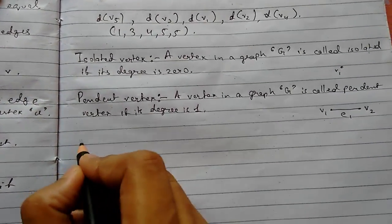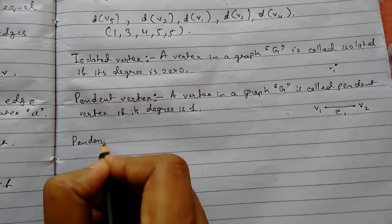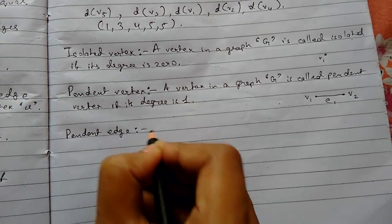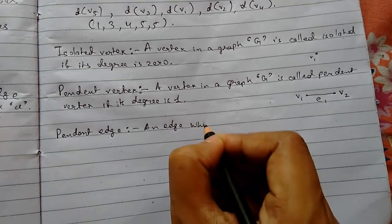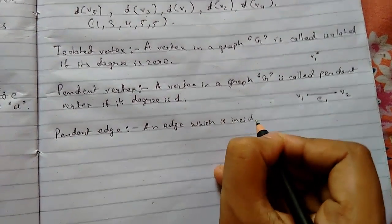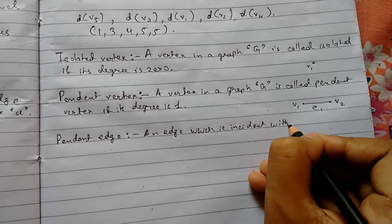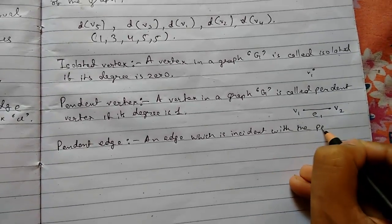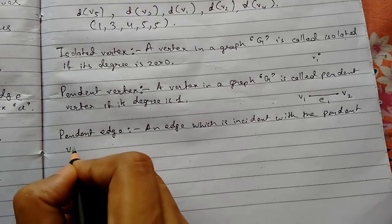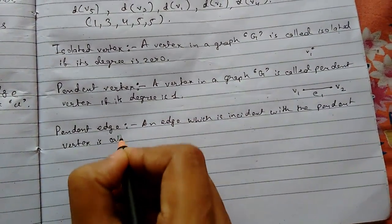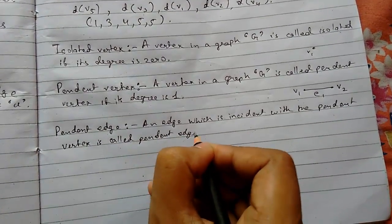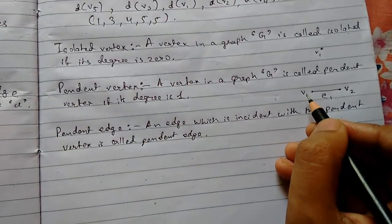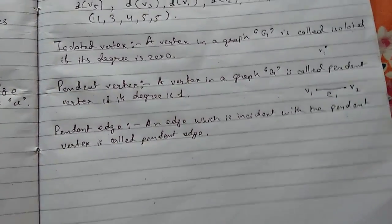Pendant edge: an edge which is incident with the pendant vertex is called a pendant edge. Here V1 is the pendant vertex, so E1 is incident to it, and it will be known as the pendant edge.